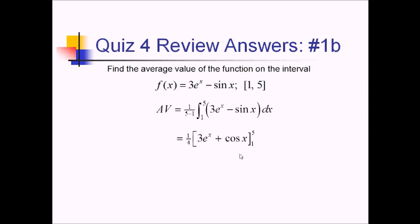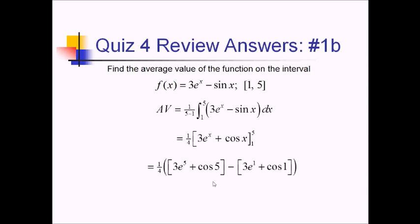Evaluating that from 1 to 5, we have 1 fourth times all of this stuff with 5 plugged in minus all of this stuff with 1 plugged in. I'm not going to go any further here because I've got all constants, so if this is a free response problem, I'm pretty much done. Also, we really can't do much more with cosine of 5 and cosine of 1 — those don't have nice neat non-decimal values. So we're just going to call it a day on this one.